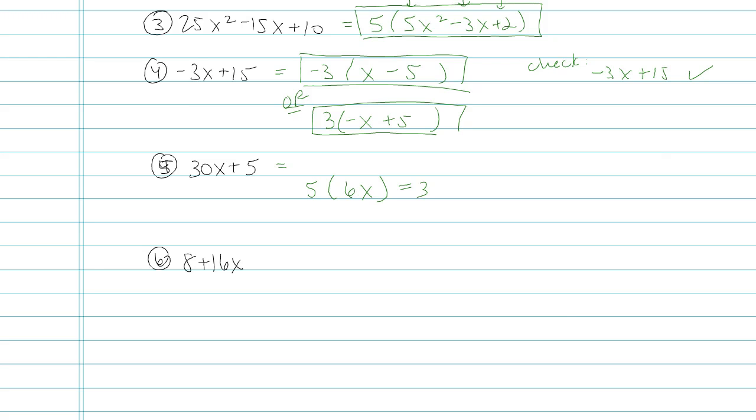But if you were to check your work, you could tell this wouldn't be quite right because this is just 30x. If I distribute, I just have 30x. I still need that plus 5 bit. So the correct way to factor this one is pull out the 5, that's good, and then I need 6x plus 1.